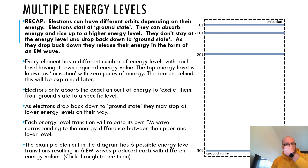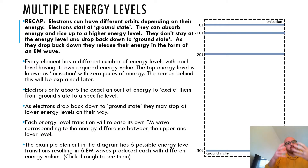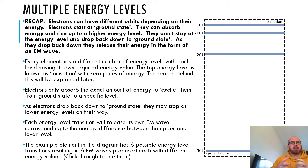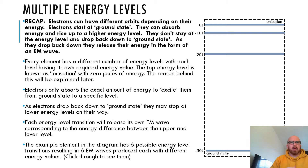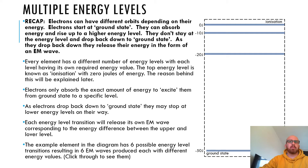We looked originally a couple of weeks ago at the Bohr model of the atom and energy levels. We're going to take that and build on that a little bit. We also did irradiance last week, so again talking about light, talking about these energy level transitions and talking about how they all tie up together. The first thing I want to do is have a little recap of what we learned a couple of weeks ago just regarding energy levels.